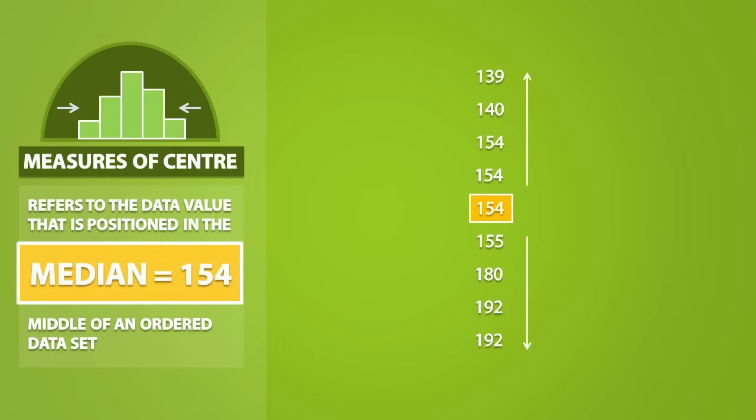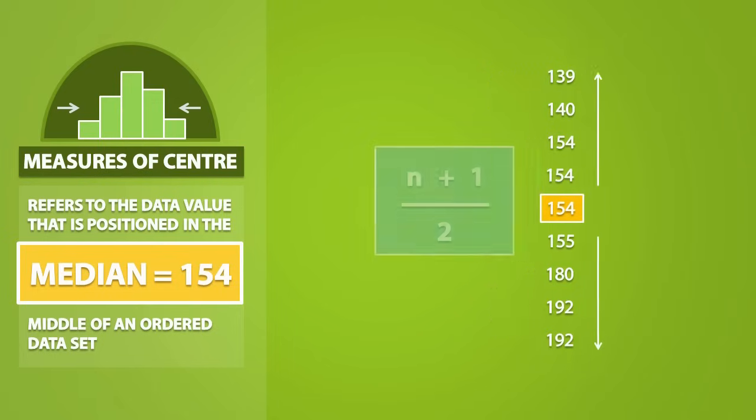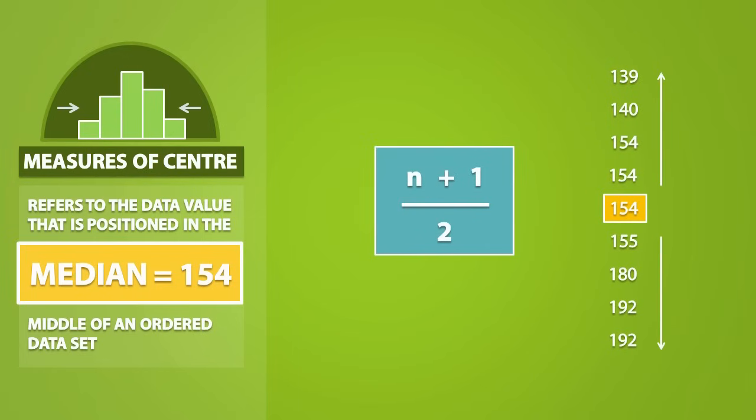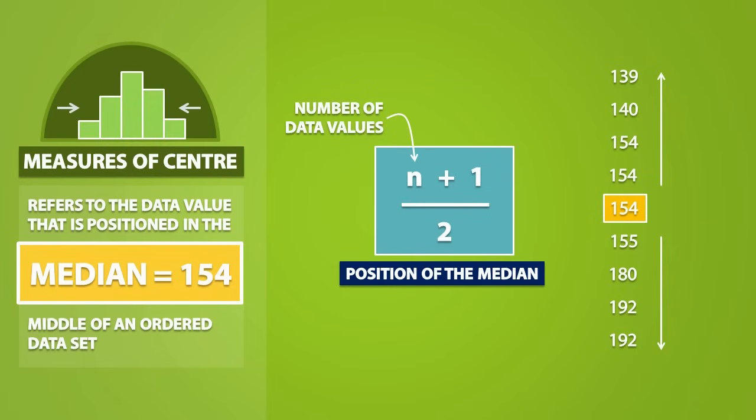When a dataset is extremely large, it might be helpful for us to use the formula (n+1)/2. This formula tells us the position of the median. N refers to the total number of data values in our sample. We have a total of 9 values in our sample, so n is equal to 9.